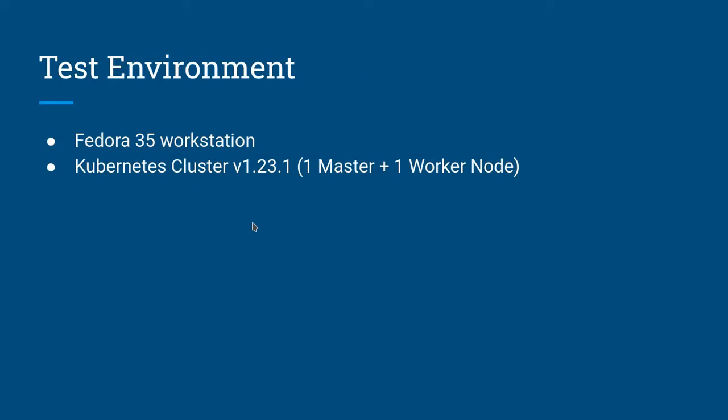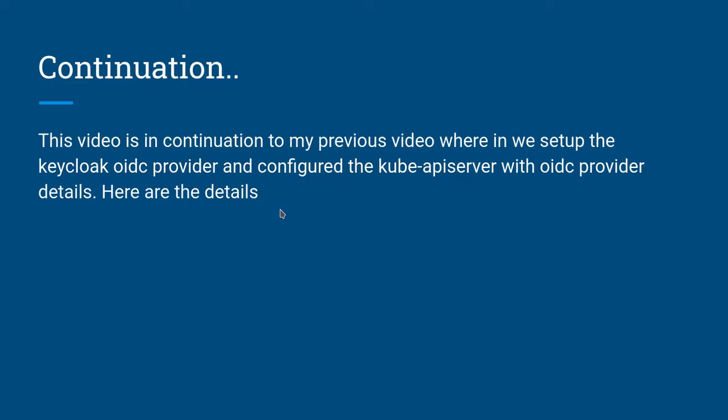I'm working on a Fedora workstation 35 with Kubernetes cluster 1.2.23.1, and in my setup I have one master and one worker node. This video is actually a continuation to my last video wherein we set up our Kubernetes cluster with Keycloak OIDC authenticator, where we tried to configure our kubectl configuration manually with the Keycloak OIDC provider details, so that API requests sent via kubectl to the API server get authenticated with the authorization token we pass in the kubectl request.